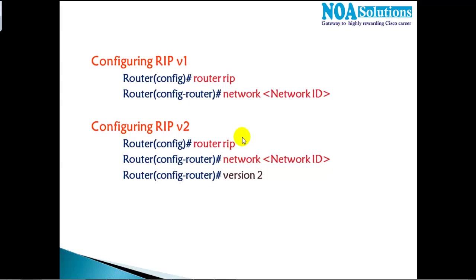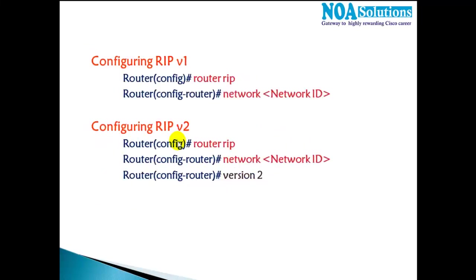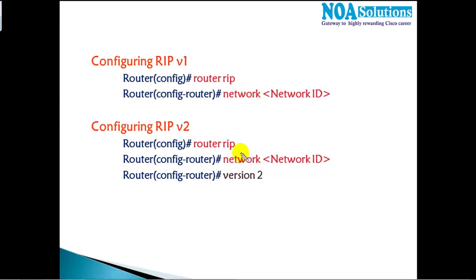In this section we'll see how to configure the RIP protocol, and we'll cover some of the advantages and disadvantages of RIP as well. To configure RIP, it's very simple. We just need to go to the router and specify which dynamic routing protocol we want to use — router RIP, router OSPF, or router EIGRP — whichever protocol you want.